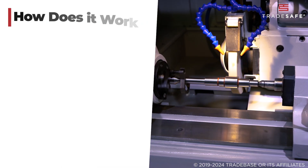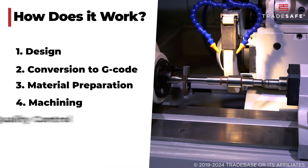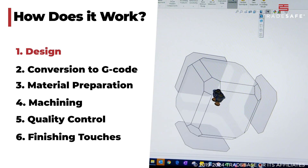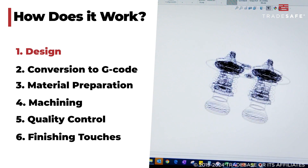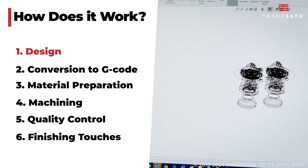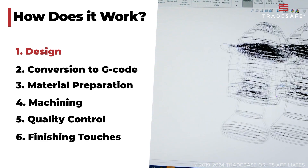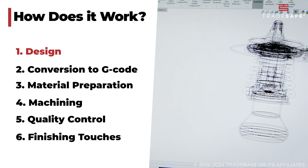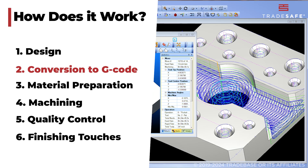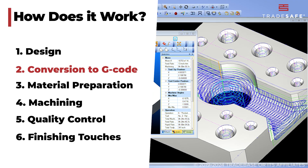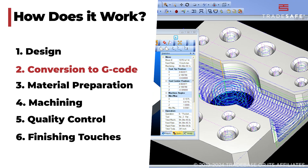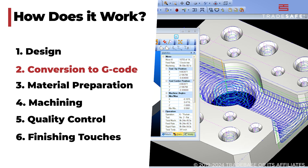CNC machines work by following precise instructions from a computer program. The process begins with a detailed design created in CAD, or computer-aided design software, where every dimension and specification is meticulously planned. Next, the CAD design is converted into G-code, a language that the CNC machine understands and uses to control its movements with precision.